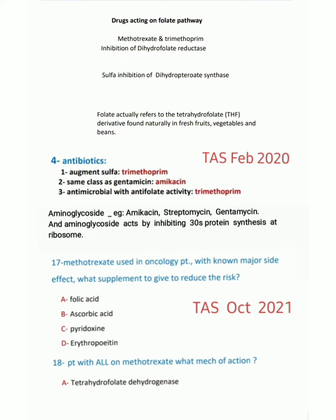Another question: a patient with acute lymphoblastic leukemia is on Methotrexate — what is the mechanism of action? We already know that the mechanism of action of Methotrexate and Trimethoprim is inhibition of dihydrofolate reductase. So this is all about drugs acting on the folate pathway.